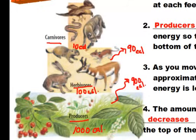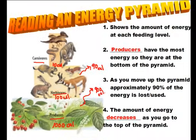As organisms carry out life functions, they use energy constantly, which is why each feeding level gets lower and lower in energy. Being at the top of the food chain may be great, but you also get the least amount of energy. The amount of energy in an area really does have an impact on how many organisms can live there — and that's what we'll talk about next.